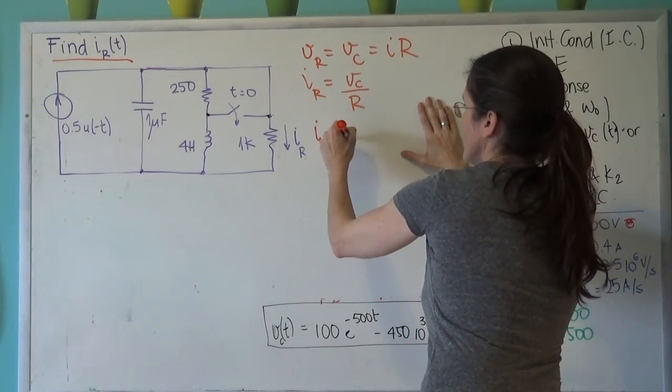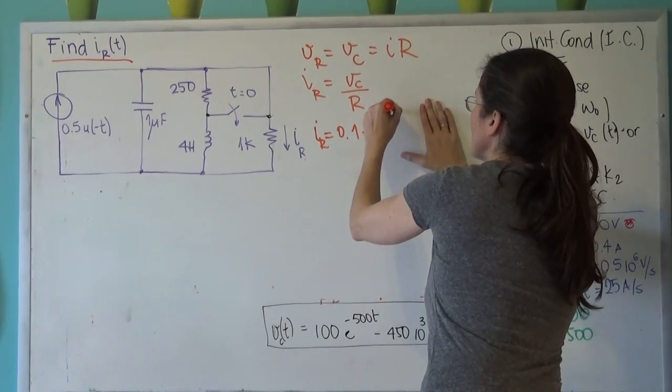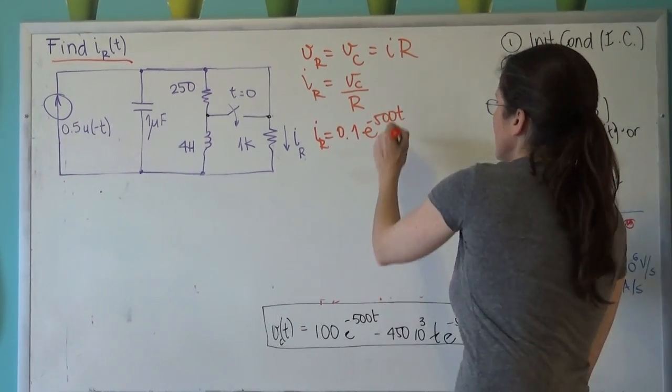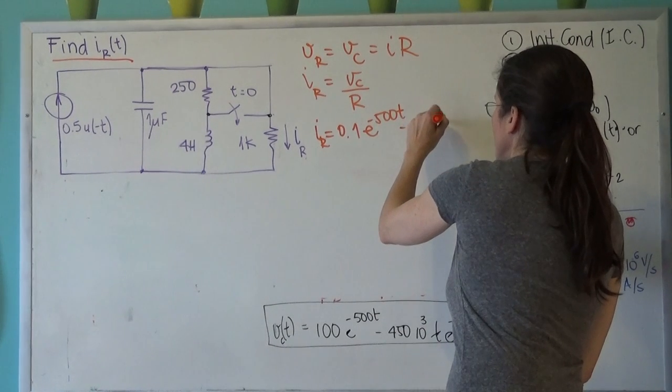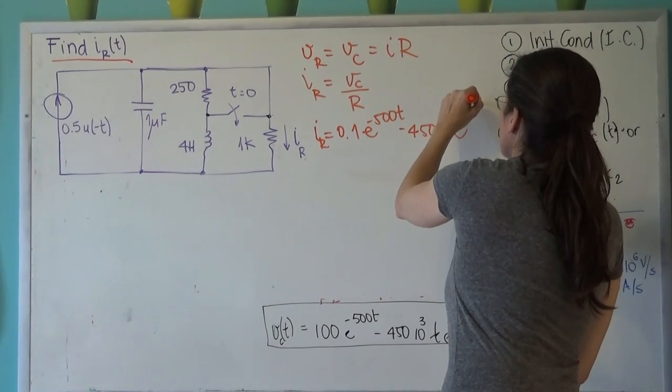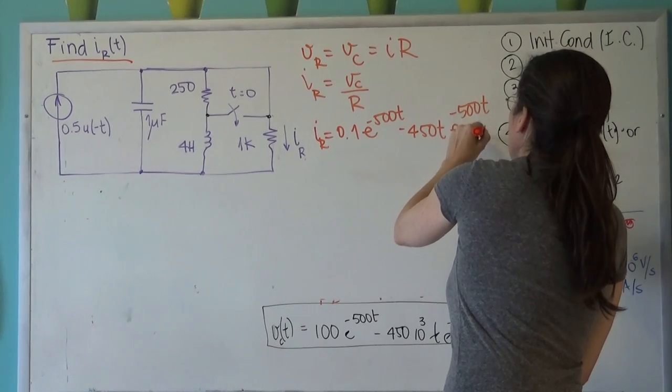That's 0.1 e to the minus 500t minus 450t e to the minus 500t amps.